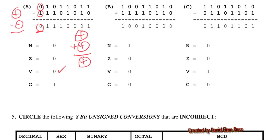For the next one — the addition — this is a negative plus a negative giving a negative. Since you add two negatives and get a negative, you expect a negative result, so V equals 0 again.